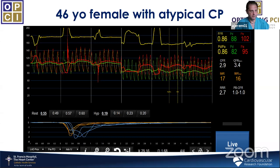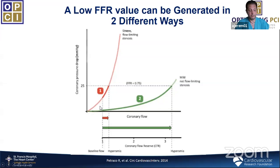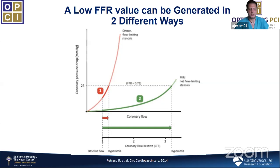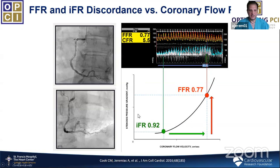The key lesson: we can generate a pressure gradient two ways. First, with a flow-limiting stenosis — increasing flow even a little will generate a gradient and produce an abnormal FFR. Second, with no lesion or a mild non-flow-limiting stenosis but very high flow — the friction from driving large flow through the vessel causes pressure loss, generating a significant gradient. This is an important concept in coronary physiology.